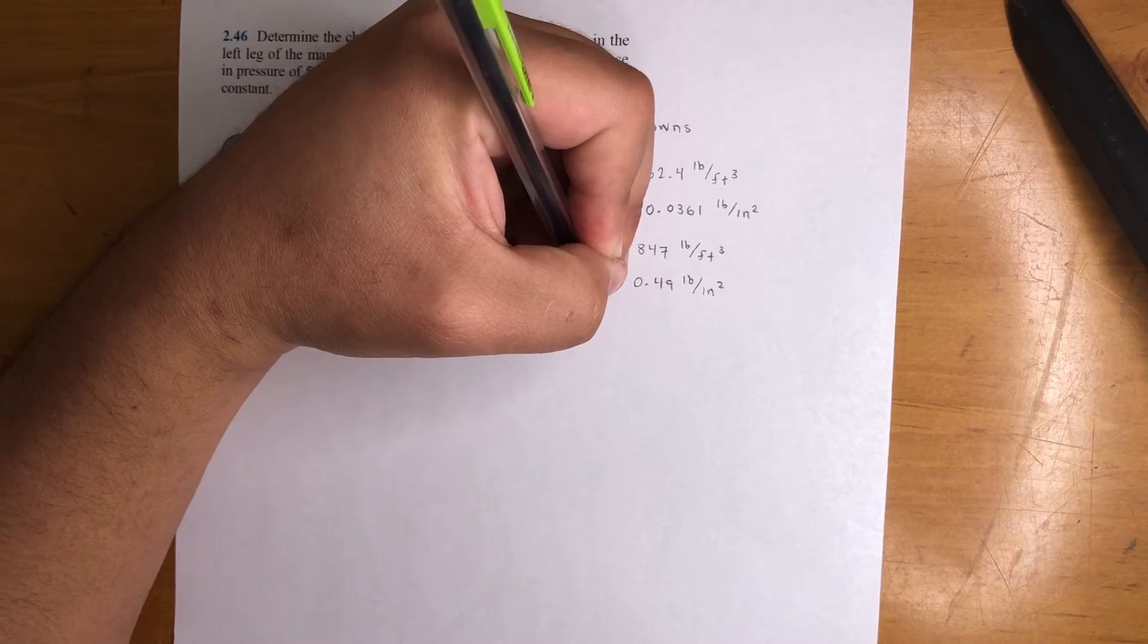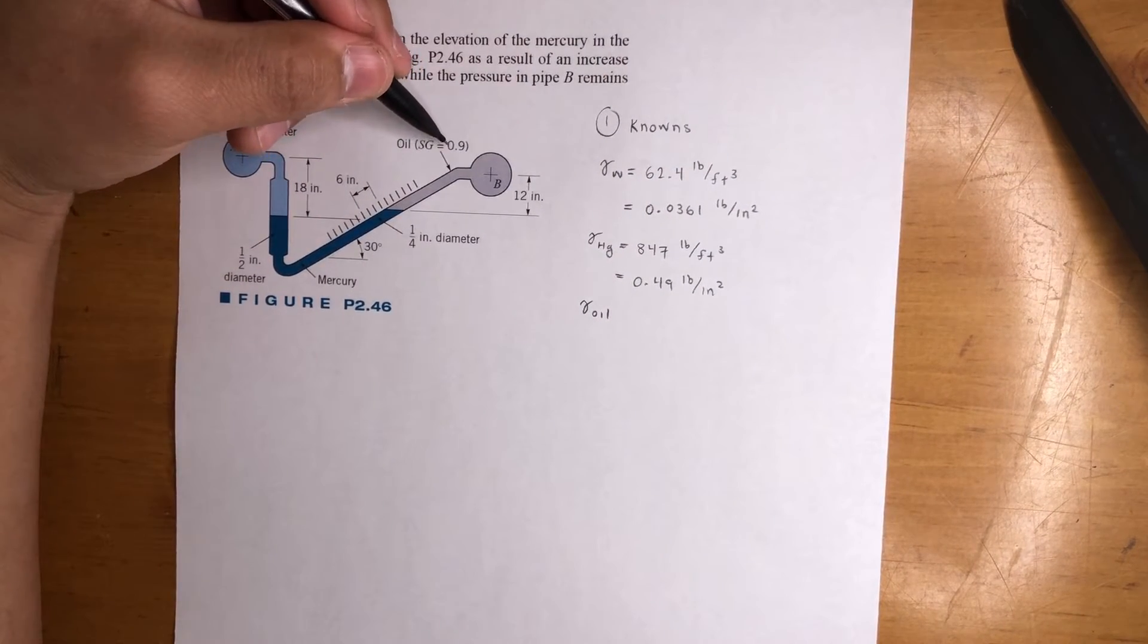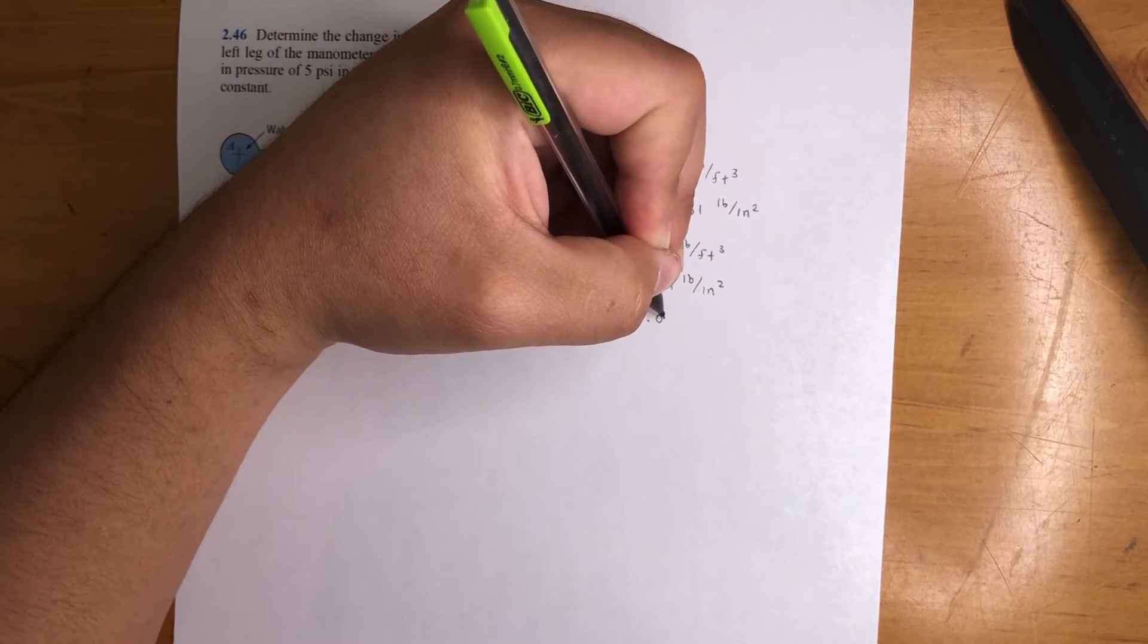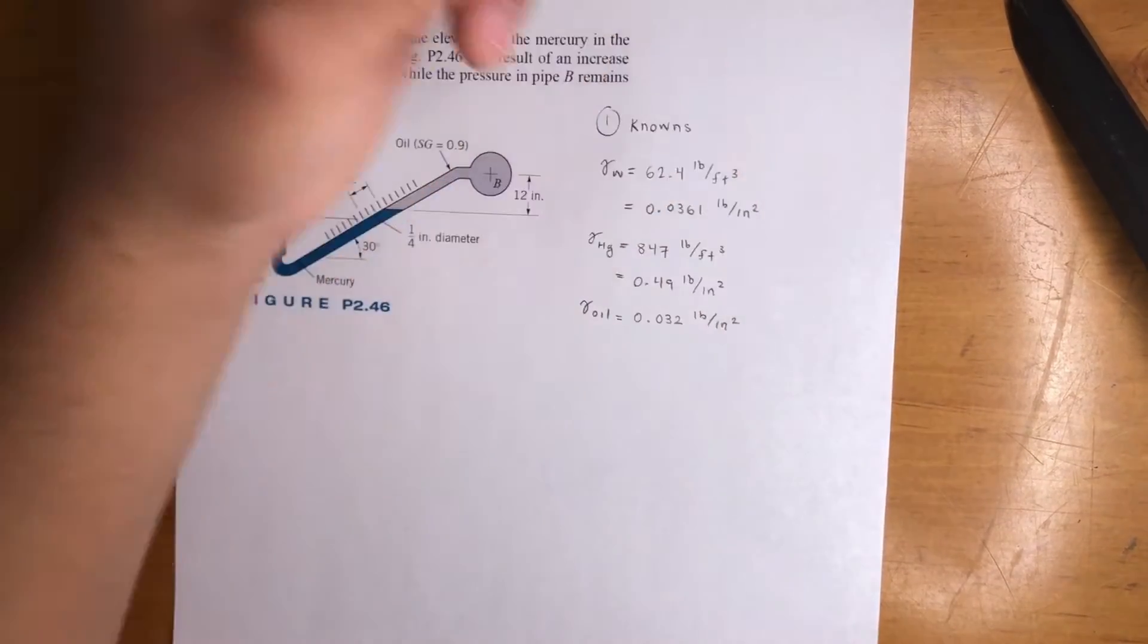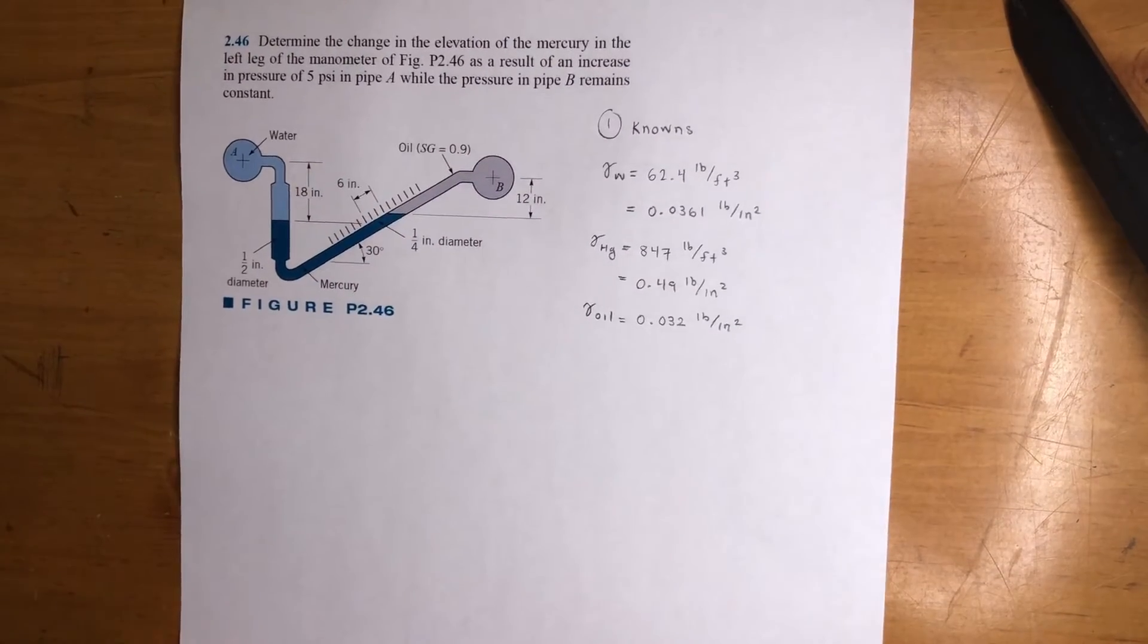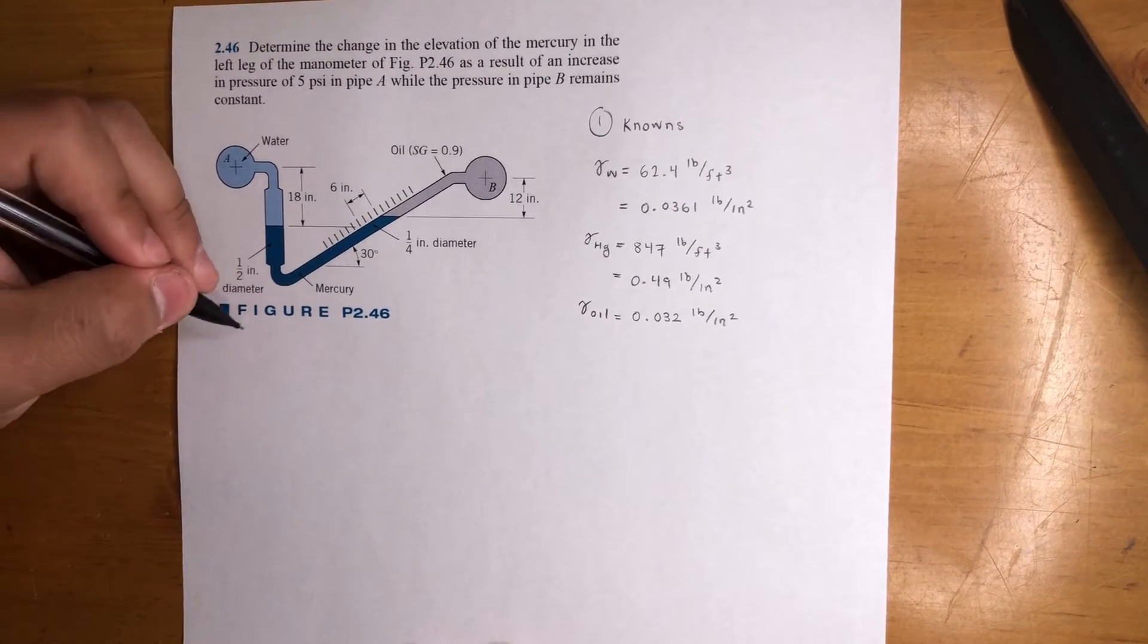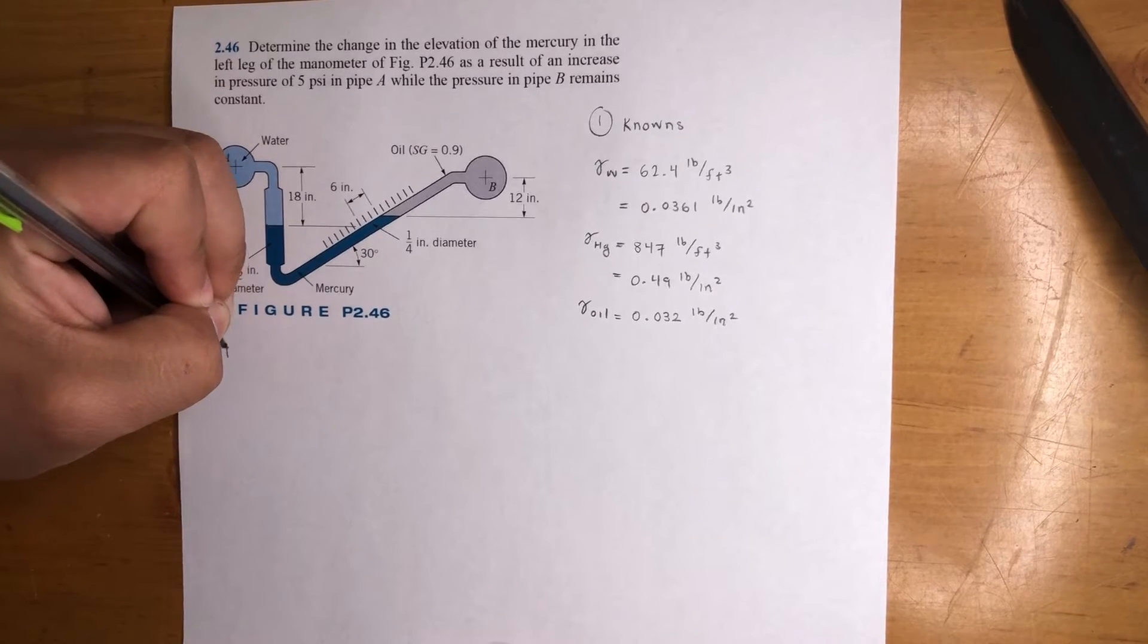Gamma of oil. We know the specific gravity is 0.9. So 0.9 times this number is 0.032 pound per inch cubed. That's pretty much it to this problem. We'll go ahead and get started with the equation, the before and after. Step 2, this is the before.